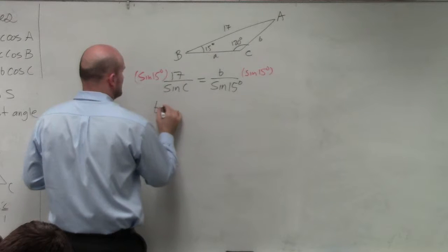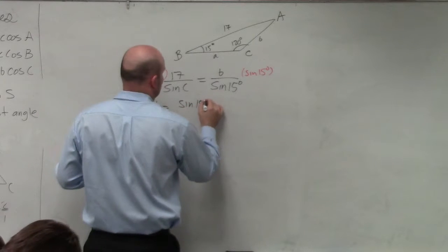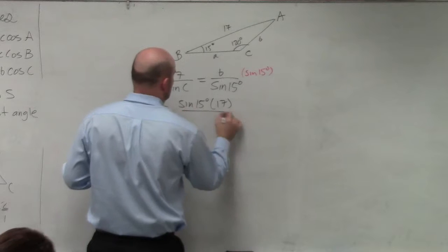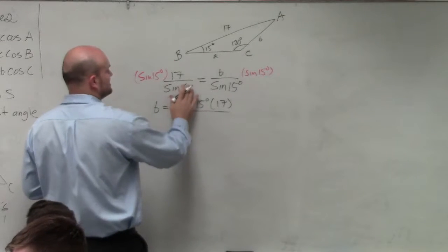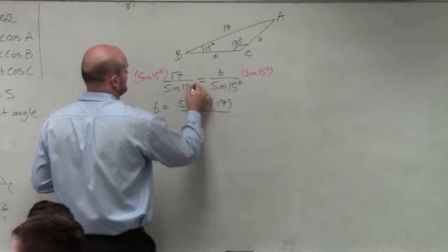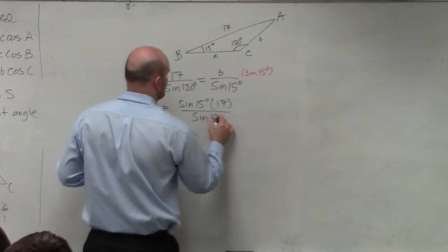And then I'd multiply by the sine of 15 on both sides. And therefore, I can say B equals the sine of 15 degrees times 17 all over, oops, C is 120.